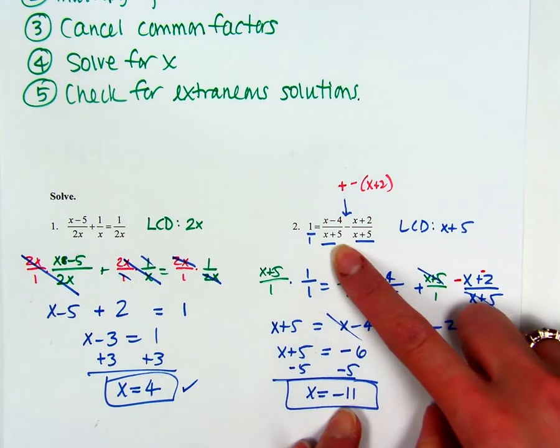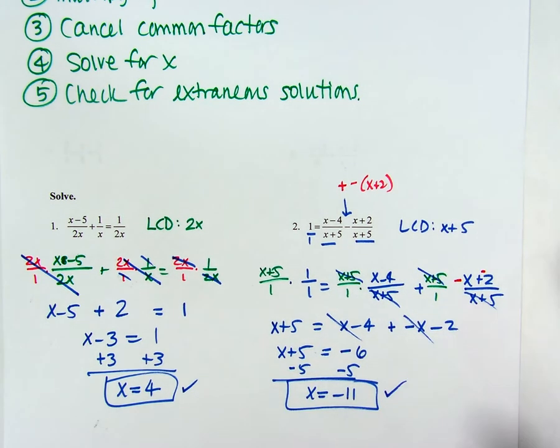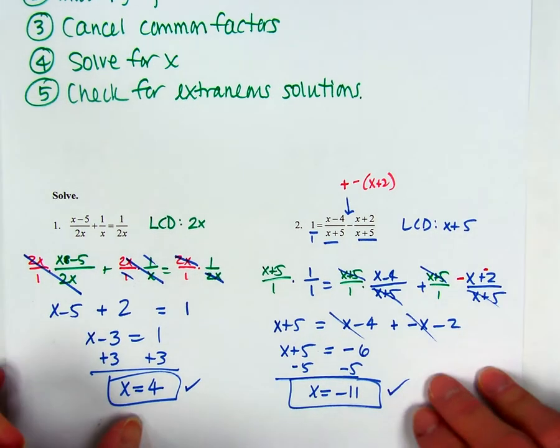And then if I subtract 5 from both sides, I get X equals negative 11. Just double check, negative 11 plus 5 is negative 6. That's not 0, so we're good. All right, so flip to the other side.